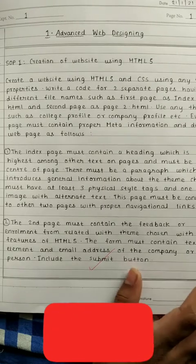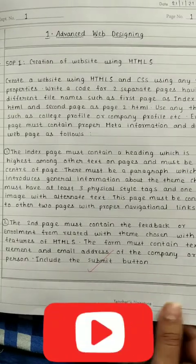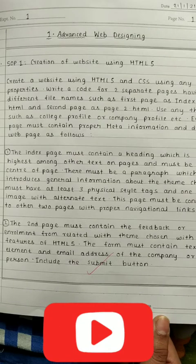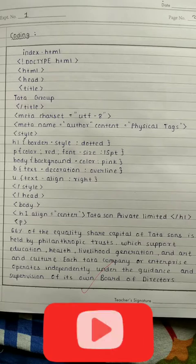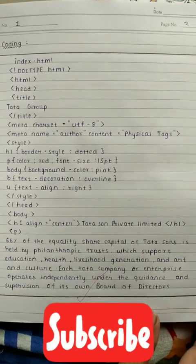This is how you need to write SOP 1: creation of website using HTML. You have to write index page details, the second page details, and this is the program of SOP. You need to write this program and execute this program.